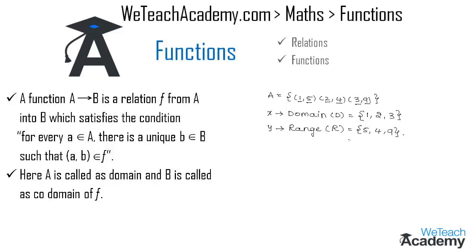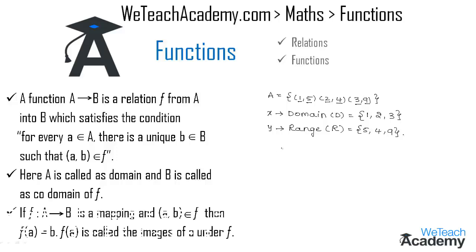If f: A to B is a mapping and (a, b) belongs to f, then f(a) = b. Here f(a) is called the image of a under the function f.